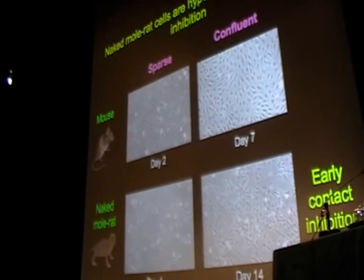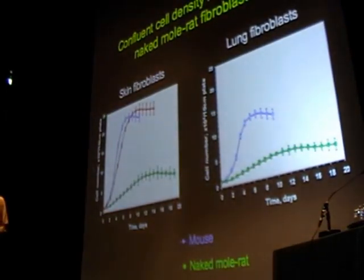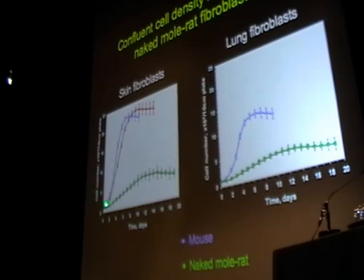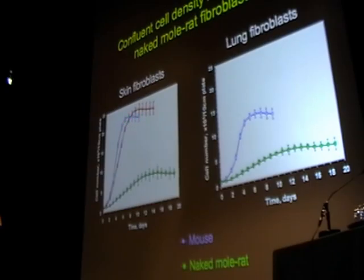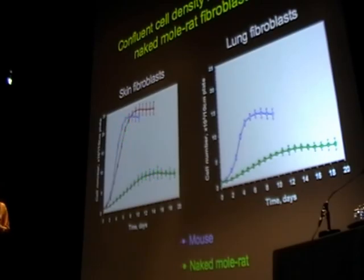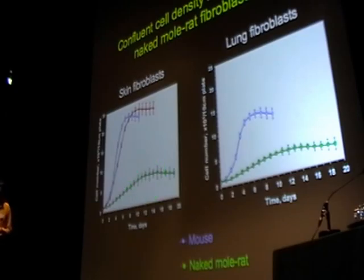Looking at the quantification of cell number on the plate: on the x-axis are days in culture, and on the y-axis is number of cells per plate. Mouse cells rapidly grow and then enter a plateau — early contact inhibition — where they stop proliferating. For naked mole-rats, they grow much slower but still enter a similar plateau, which we call early contact inhibition because cell density is much lower. The cells just start touching each other and then stop proliferating. This cell cycle arrest can be confirmed by thymidine and BrdU incorporation assays.